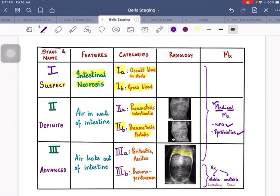Let's discuss treatment. Up to Stage 3a, medical management is done with NPO and antibiotics. For Stage 3b, surgical management is recommended. For stable patients, laparotomy is done. For unstable patients, drainage is done.